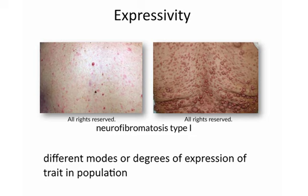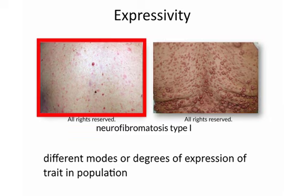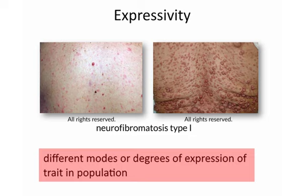Another concept that sometimes is confused with penetrance is that of expressivity, graphically depicted by these two pictures of the backs of individuals with neurofibromatosis type 1 — a condition that causes tumors to form along peripheral nerves. Both are adults: you can see just a huge number of neurofibromas on the skin on the right, and only a relatively small number on the left. Same condition, but very different degrees of expression. Expressivity constitutes differences in the mode or degree of expression of a phenotype — for example, the overall number of dermal neurofibromas an individual might get with neurofibromatosis type 1.